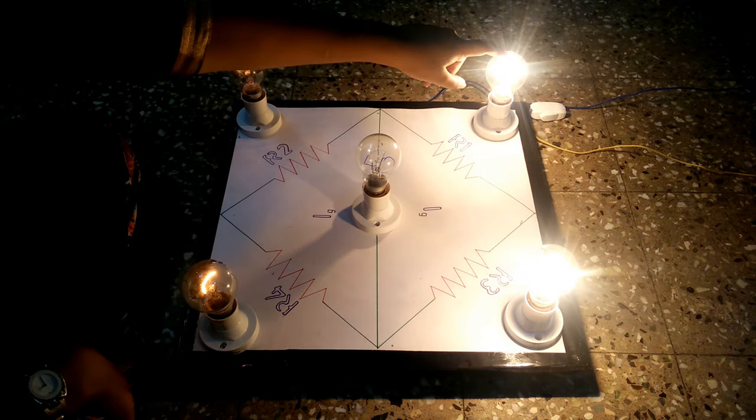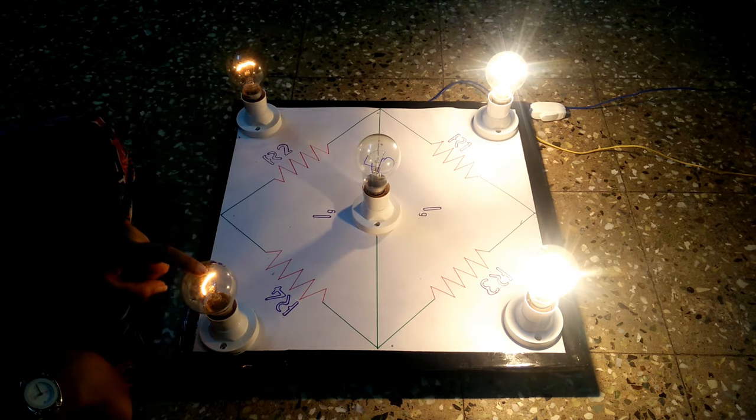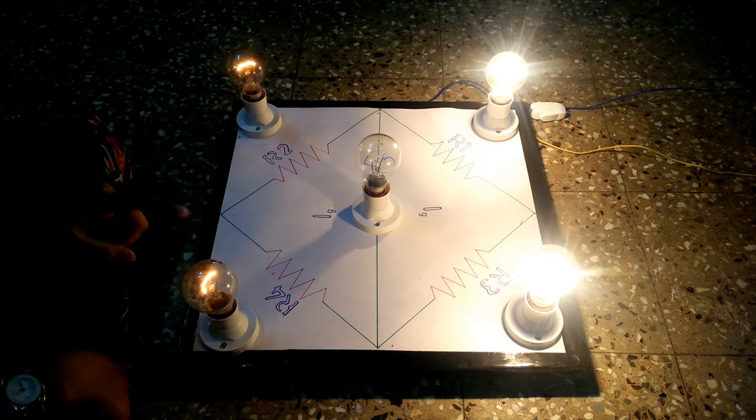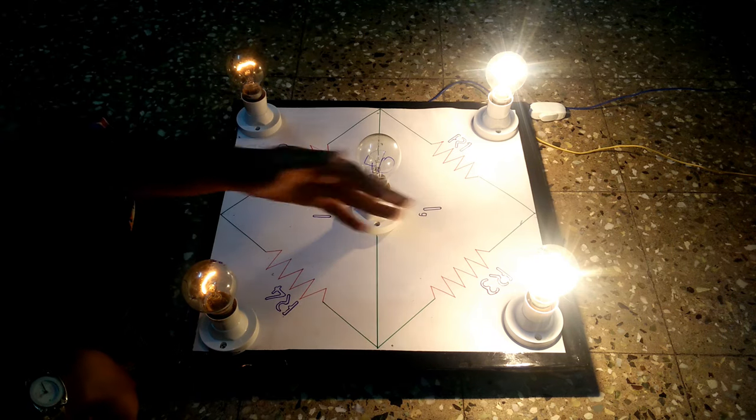R1 has a 60 watt bulb, R2 has a 100 watt bulb, R3 has a 60 watt bulb, and R4 has a 100 watt bulb. You may have guessed that the ratio between R2 and R1 equals the ratio between R4 and R3.